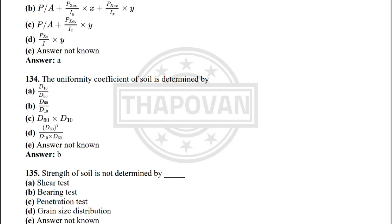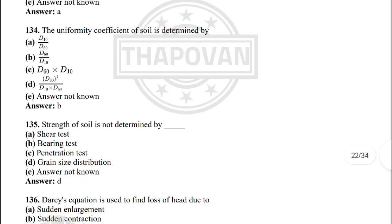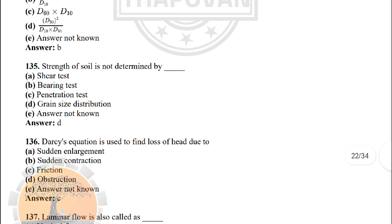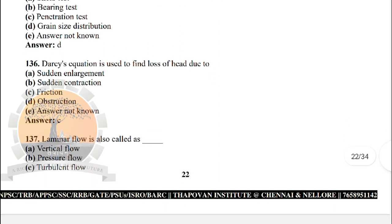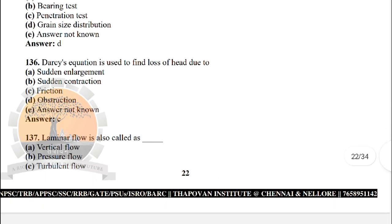Next: the uniformity coefficient of soil is determined by — the correct answer is option B: D60 / D10. Next: strength of soil is not determined by — option D: grain size distribution.